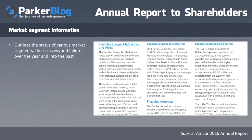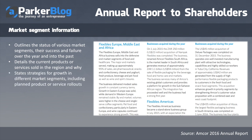Next is market segment information. This outlines the status of various market segments — successes and failures over the year and into the past. It details the current products or services sold in each region and explains why, for example, a product might be sold in America but not in Europe. It also states strategies for growth in different segments, including planned product or service rollouts, and touches on the geopolitical climate of each segment and how it may help or hurt business.